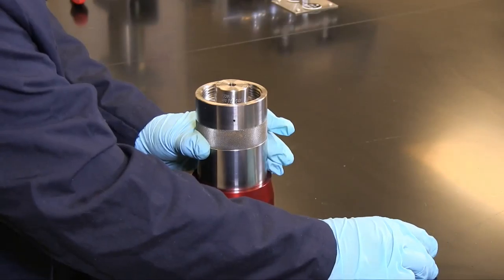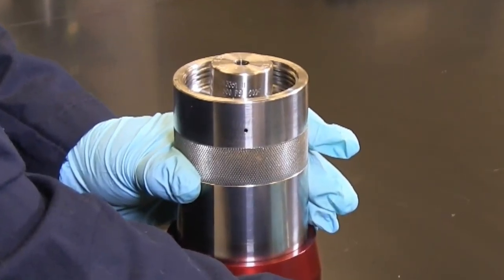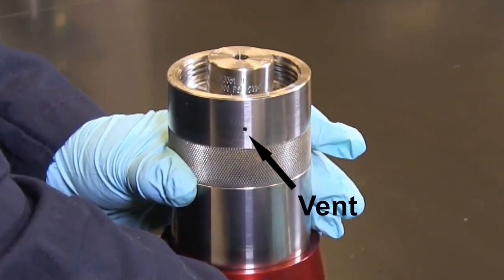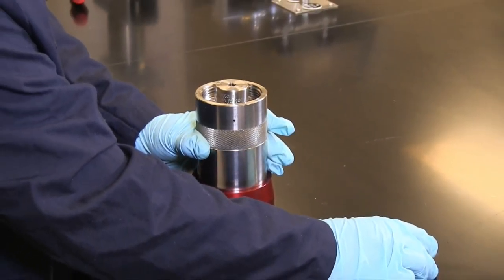Two vent holes in the body safely vent any trapped pressure as the cap is loosened and all pressure is released before the cap can be removed.